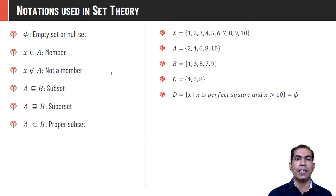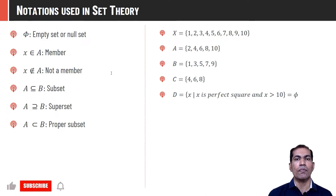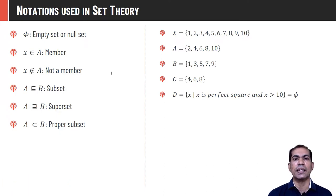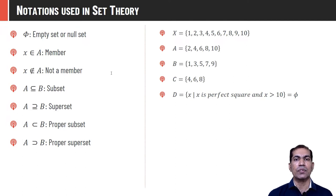Proper subset: A ⊂ B means all elements of A are in B, and B contains some additional elements. In a subset relationship A and B can be identical, but in a proper subset relationship B must have elements not in A. A proper superset of B means A contains all elements of B plus additional elements, and A cannot be the same as B — unlike superset, where A and B can be identical.